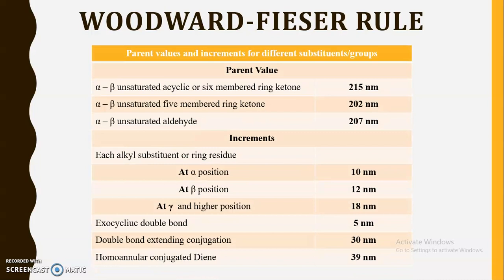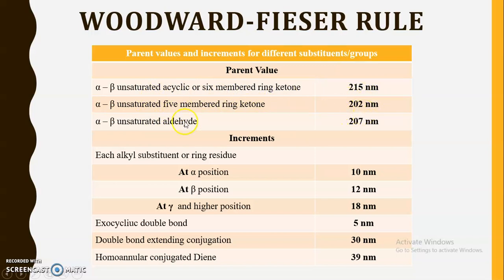This is the table which explains the different parent values utilized for different carbonyl compounds. Carbonyl compounds can be of ketone type or aldehyde type. If alpha, beta unsaturated acyclic ketone or six-membered ring ketone is there, then we use a parent value of 215 nanometers. If it is a five-membered alpha, beta unsaturated ketone, then the parent value is 202 nanometers. If it is an alpha, beta unsaturated aldehyde, then the parent value is 207 nanometers.